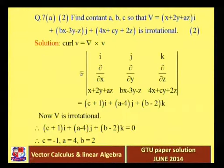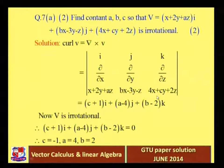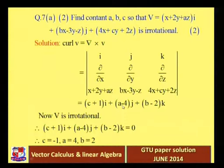Expanding the determinant: for the i component, take del/del y of (4x + cy + 2z) which gives c, minus del/del z of (bx - 3y - z) which gives minus 1, so we get (c + 1)i. For the j component, del/del x of (4x + cy + 2z) is 4, minus del/del z of (x + 2y + az) is a, giving (a - 4)j.